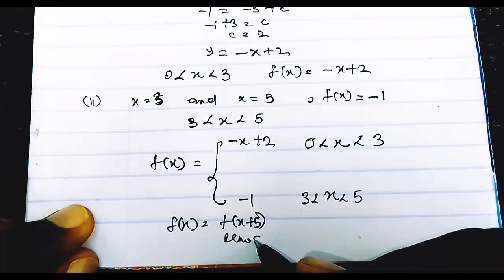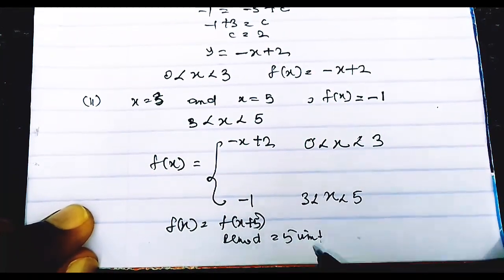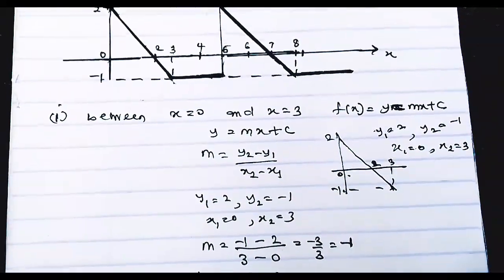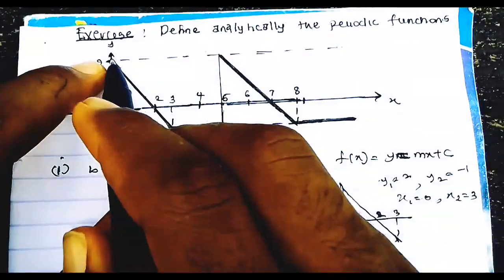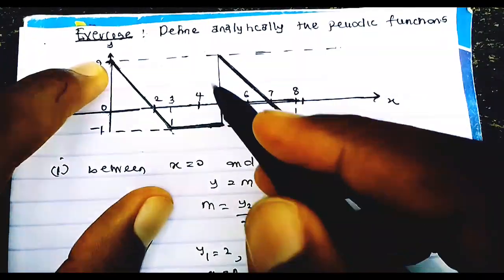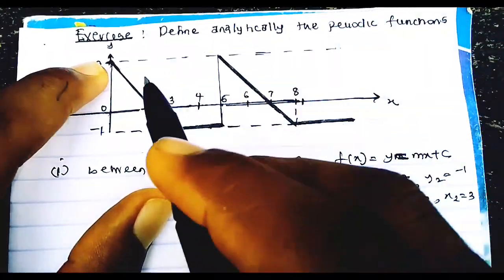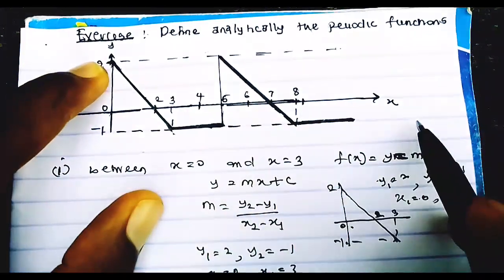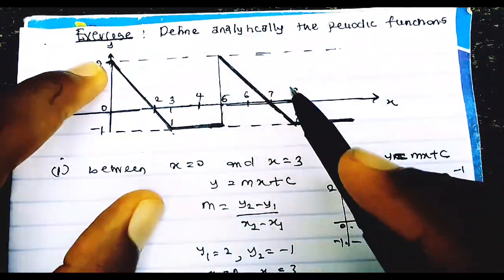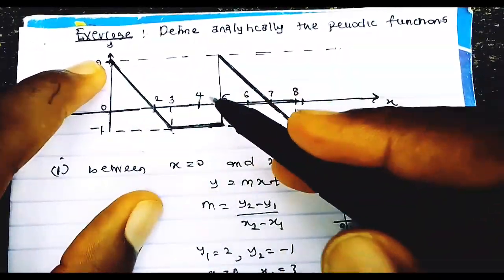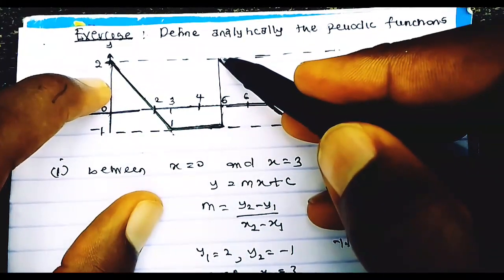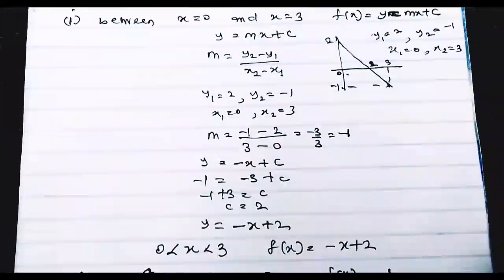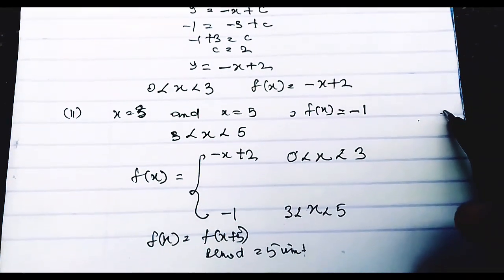The period is 5 units. To explain: the period is the distance between two starting points. This is your first starting point; the graph flows, ends, and starts again here. The space between those two starting points on the x-axis is the period — which is why it's 5 units.